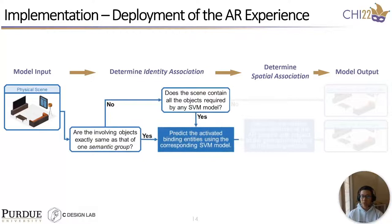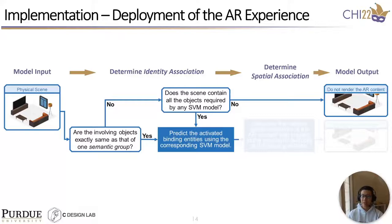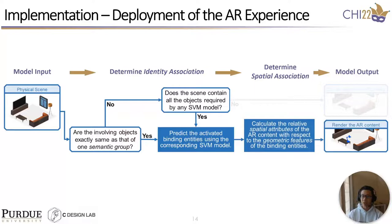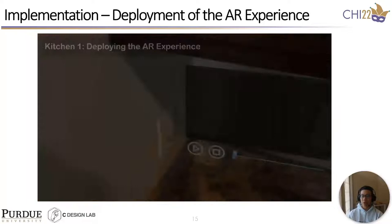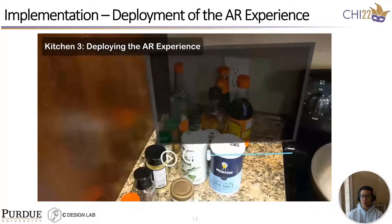Finally, back in AR, SCALAR deploys the AR experience to a new environment using this semantic adaptation model. First, we check whether there exists an SVM model that takes some of the involving physical objects as inputs. If our system doesn't find any applicable SVM model, we won't render the AR content — for instance, if the designer creates a living room decoration AR app, most of the AR contents won't be suitable for a kitchen environment. If the system finds a proper model, it adopts the model to get the activated identity association, then calculates the local spatial attributes of the AR content and renders it in the environment. For the deployment of the cooking tutorial, AR consumers scan their local kitchen layouts using the same scene collection module, and SCALAR adaptively renders the AR contents using the semantic adaptation model. Thank you for watching. For more details such as the use cases and user studies, please refer to our paper and video.